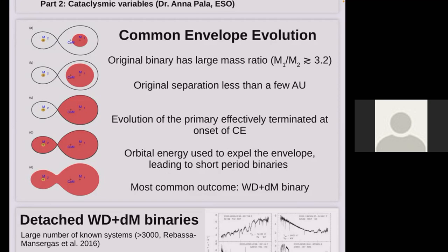We're talking about binaries that had an original separation of a few astronomical units at most — close enough that when the primary was a giant, it did fill its Roche lobe at some point. Once the primary fills this Roche lobe, this common envelope event occurs. We believe this event is extremely rapid, probably around a thousand years, perhaps even quite a lot less. During that event, the entire outer envelope of the primary star is lost, effectively terminating the evolution of the primary star and cutting it off at an exact point. The effects of that can be seen in the distribution of the parameters of these binaries and the white dwarfs — this is imprinted into the population. This envelope is expelled using energy from the orbit: the orbital energy is transferred into the envelope and used to eject it.